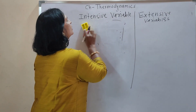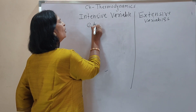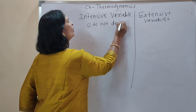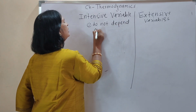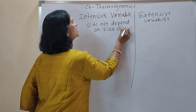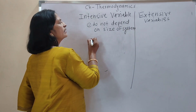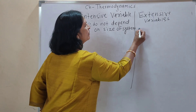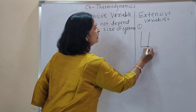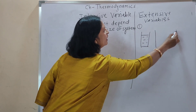Intensive variable is a variable which does not depend on the size of the system. Consider a second example: a glass of water and a bucket containing water. The density of water in the CGS system is 1 gram per centimeter cube. Whether the size of the system is small or large, the density is the same. So density also does not depend on the size of the system, and that variable is called an intensive variable.